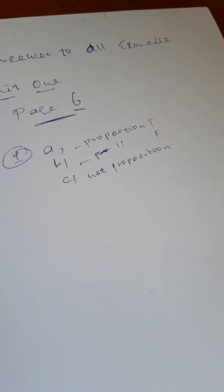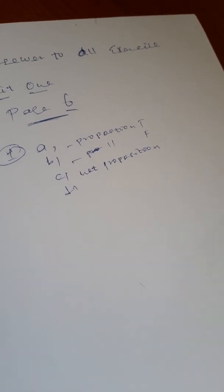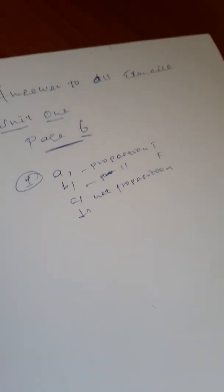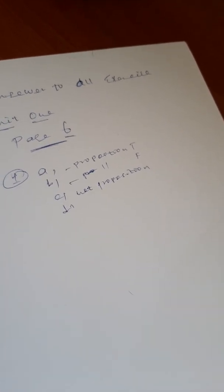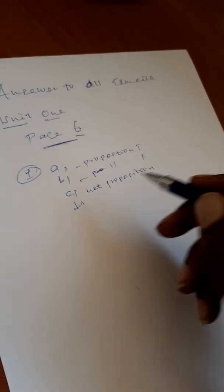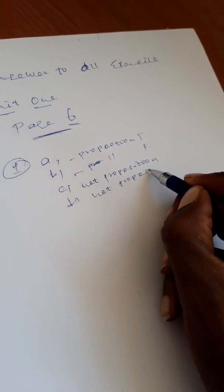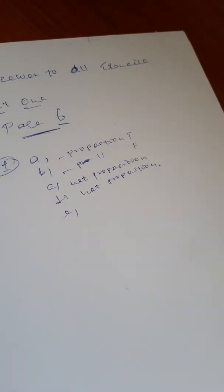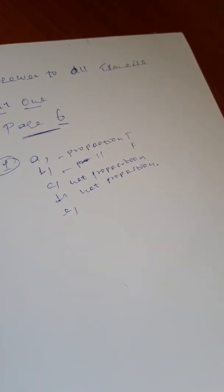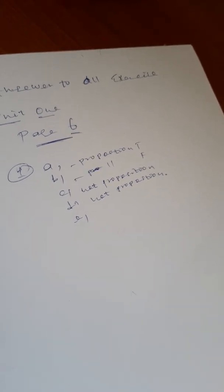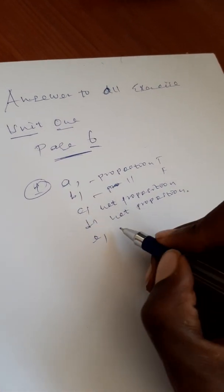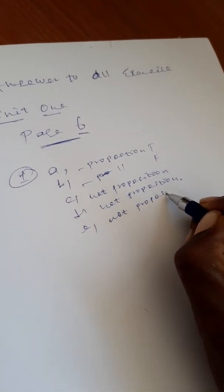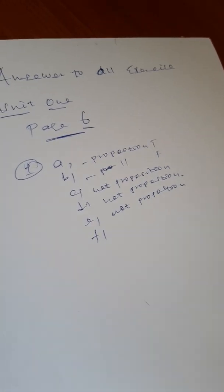Multiply 5x plus 2 by 3. This is a command or instruction, not a declarative statement, so it is not a proposition. What an impossible question! — that is an exclamatory sentence, so it is also not a proposition.